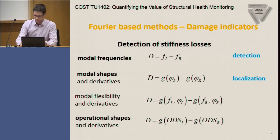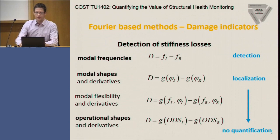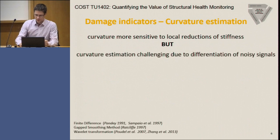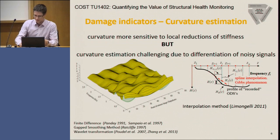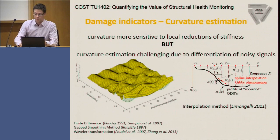With these methods, we need a good grid of sensors to have some precision and some assumptions about the structure itself for being able to localize damage, but in general we cannot easily reach quantification. One example is a method using modal curvatures, which are more sensitive to local stiffness reductions, but they have the problem that getting the curvature from the data is a difficult task because we have noisy signals and differentiation is ill-conditioned. Here, an interpolation method was used that interpolates the modal curvature and takes the difference between reference and damage states in order to localize damage.